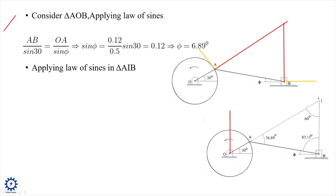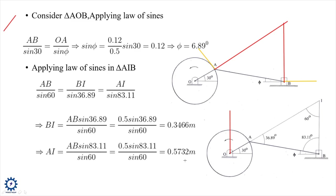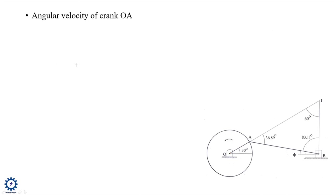Applying the law of sines to triangle AIB: AB/sin60° = BI/sin36.89° = AI/sin83.11°. We obtain BI = 0.3466 m and AI = 0.5732 m. The angular velocity of crank OA is: omega_OA = 2π × 400/60 = 41.89... actually computed as 31.4 rad/s.